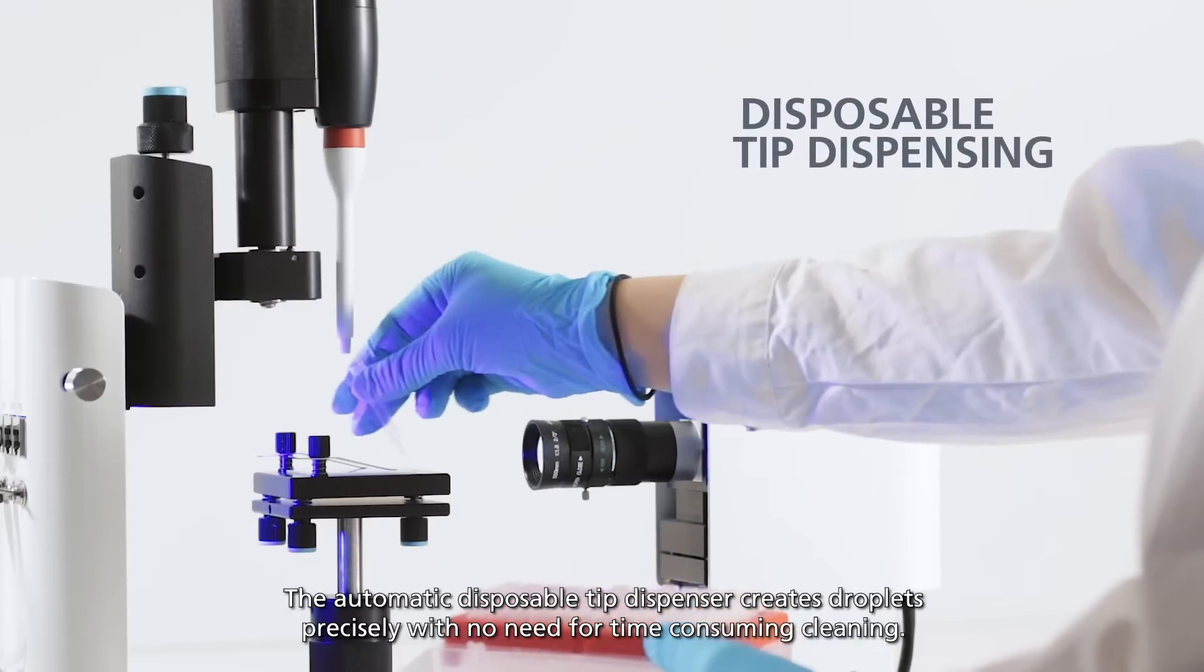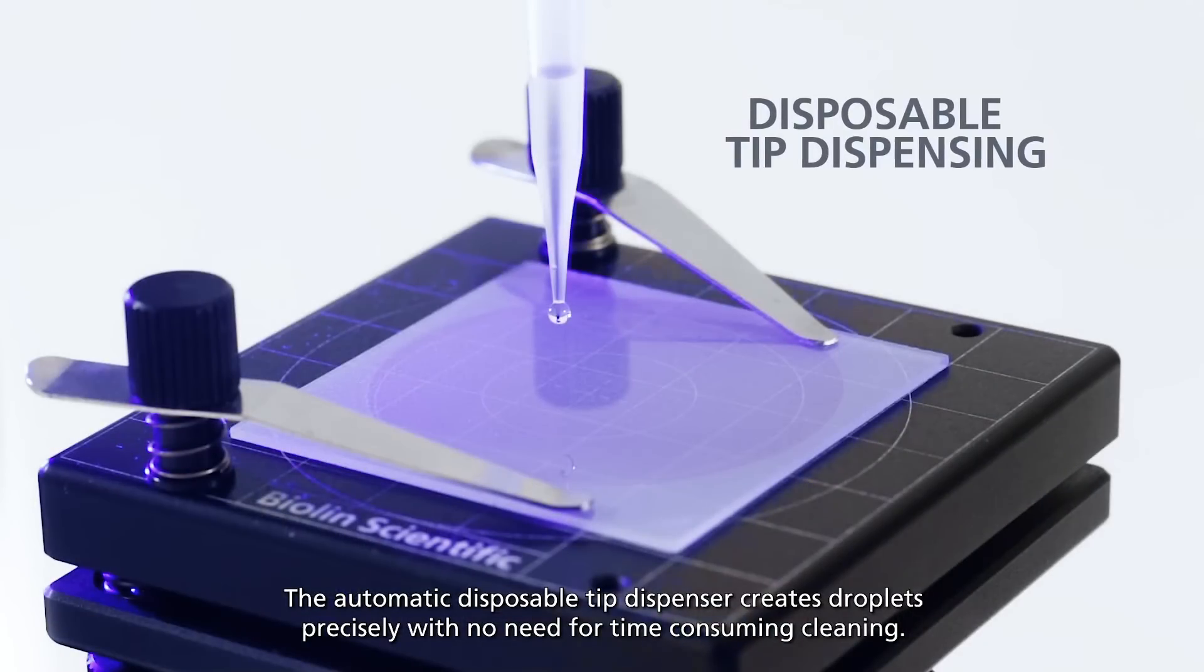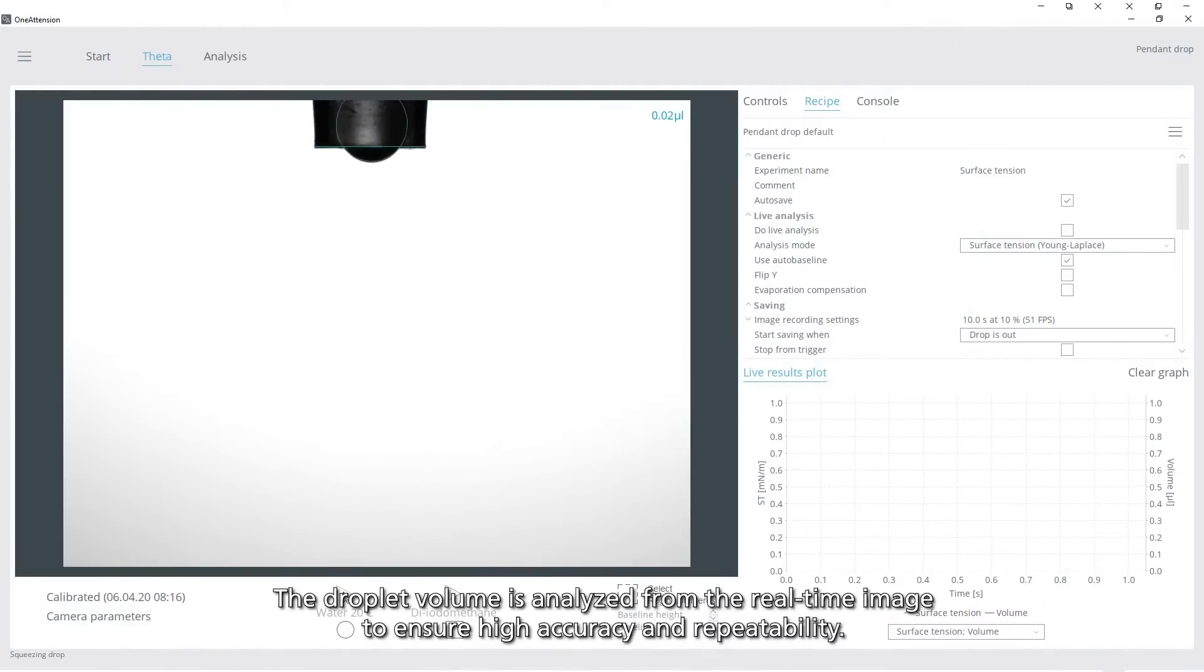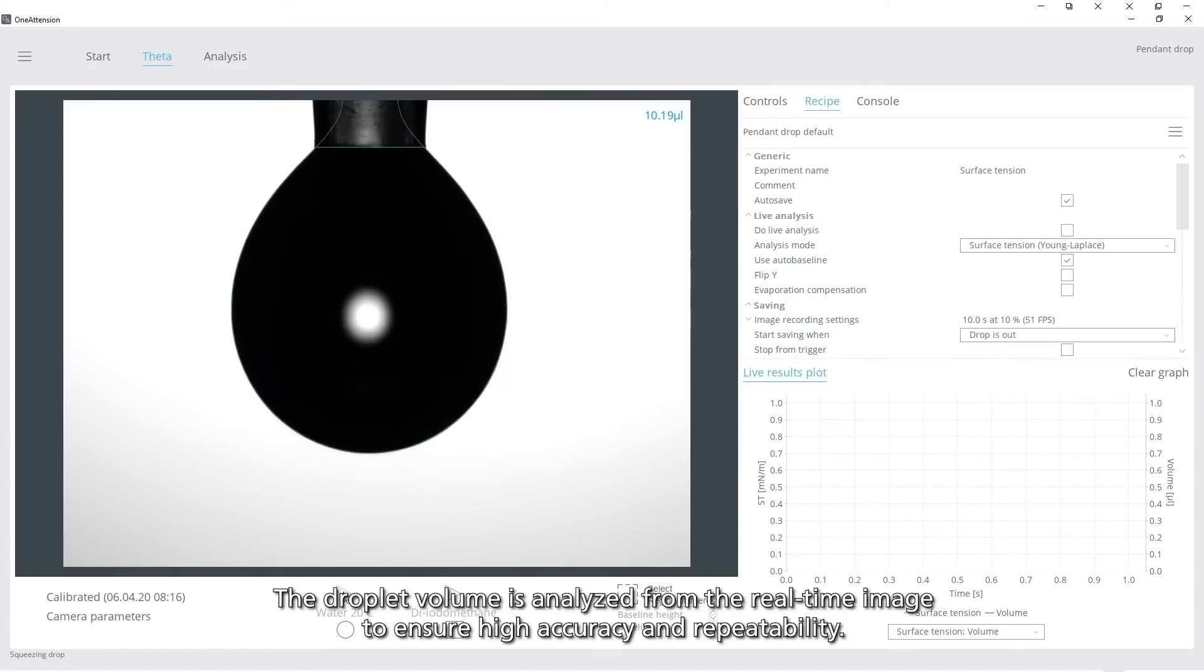The automatic disposable tip dispenser creates droplets precisely and with no need for time consuming cleaning. The droplet volume is analyzed from the real-time image to ensure high accuracy and repeatability.